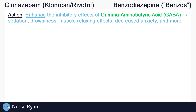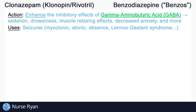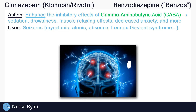This is why you can think of clonazepam as a CNS depressant. Now that we know how clonazepam works, it's a lot easier to work through what it's used for. Clonazepam is used in the treatment of various seizure types, including myoclonic seizures, atonic seizures, absent seizures in some cases, Lennox-Gastaut syndrome, which is a type of epilepsy, and more.